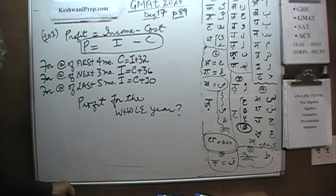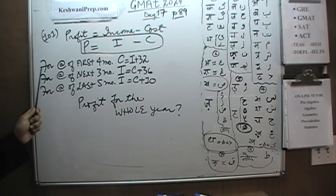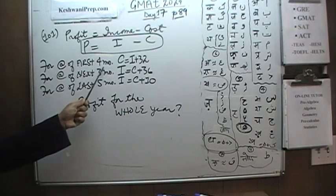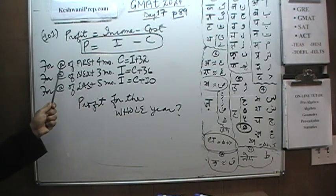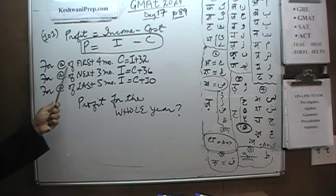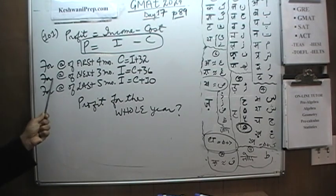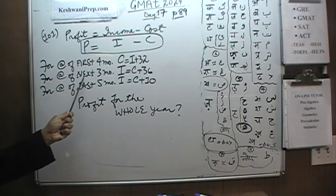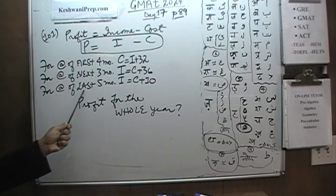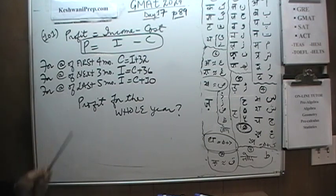One more thing before you start: make sure you understand that it says 'for each of the first four months' — this is not for all four months combined, this is for each individual month. That is what the equation means per month. Go ahead.